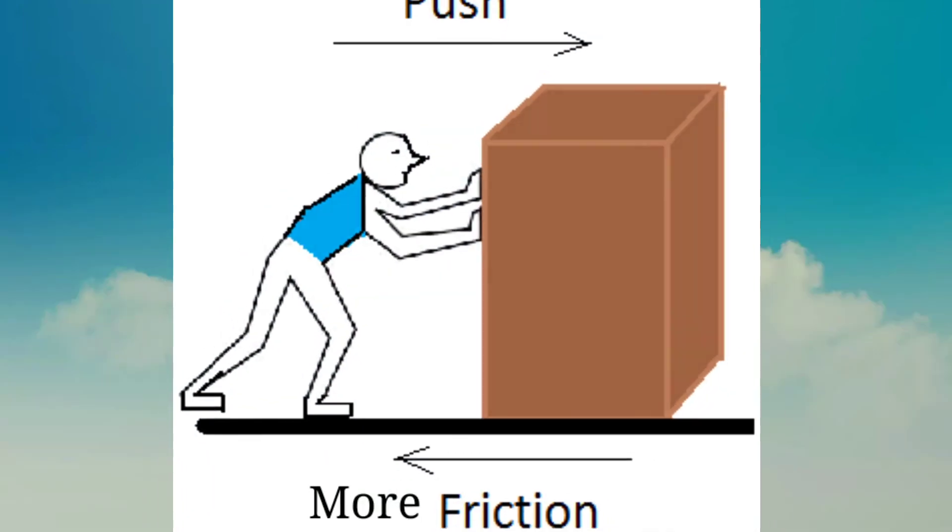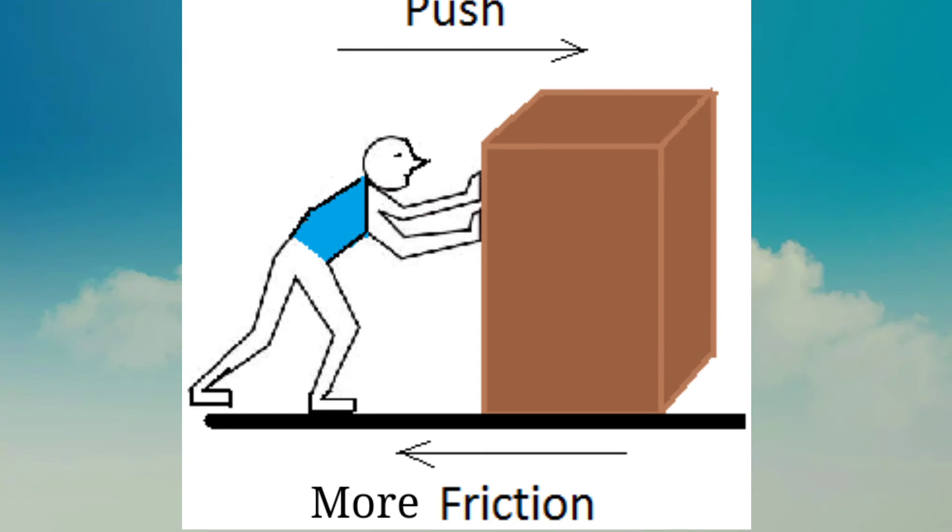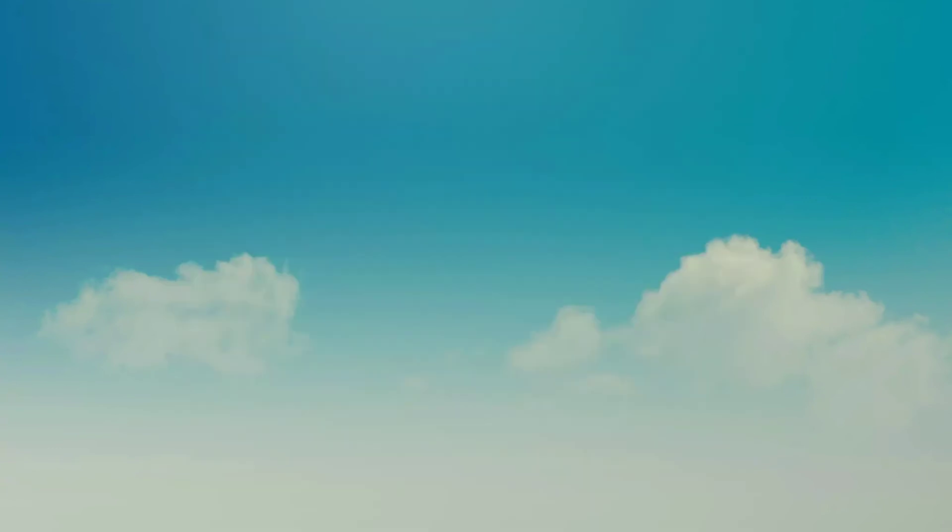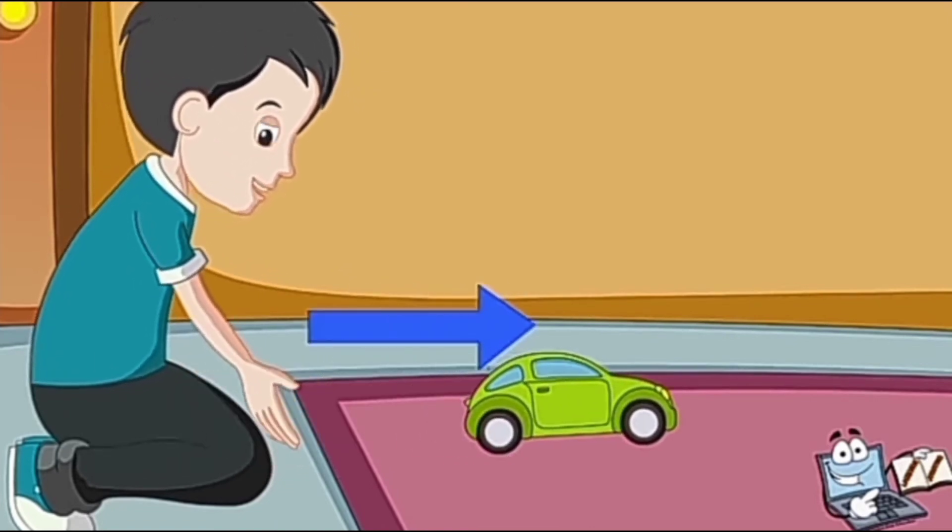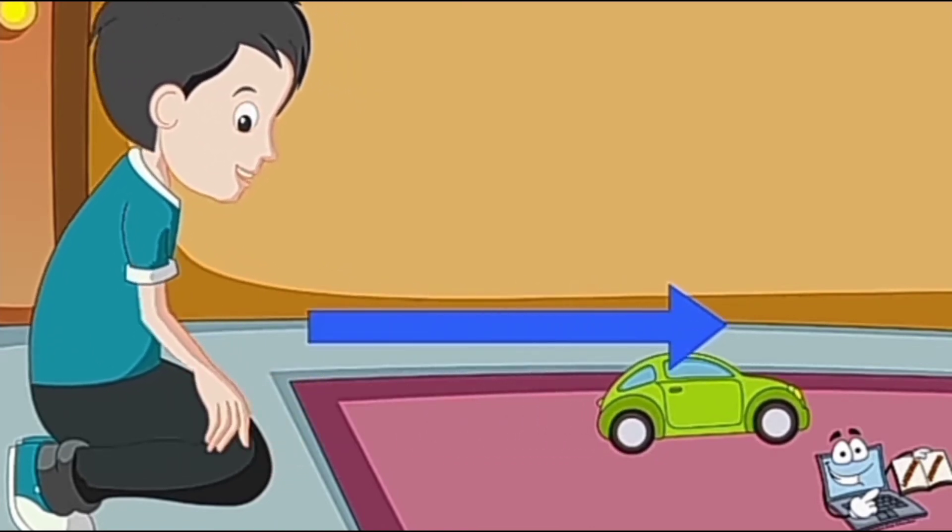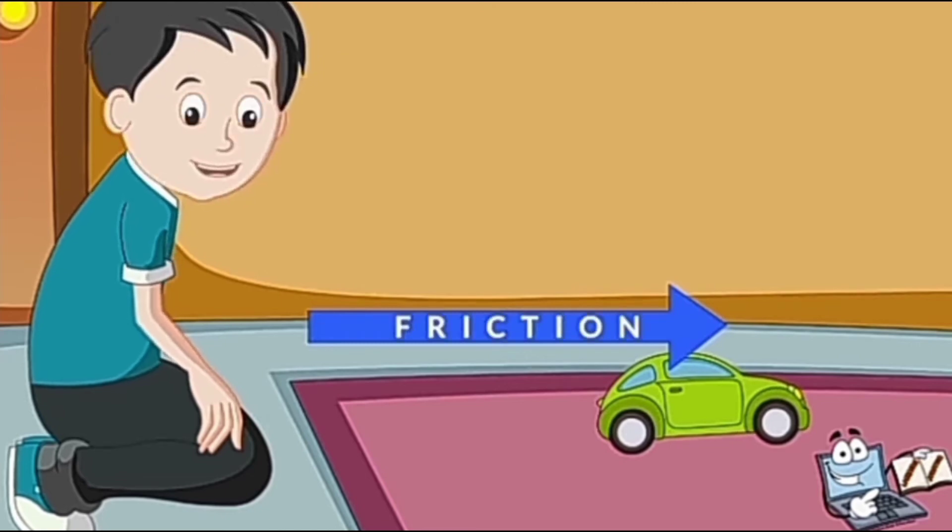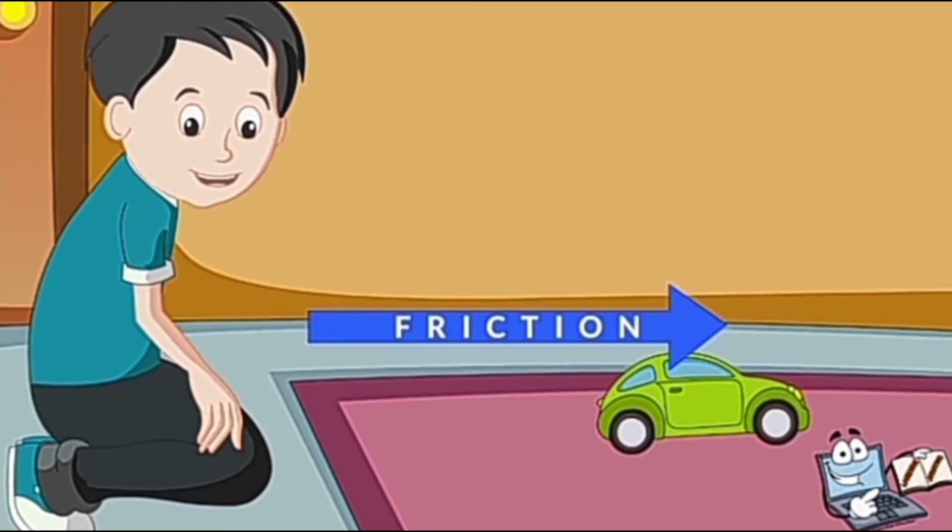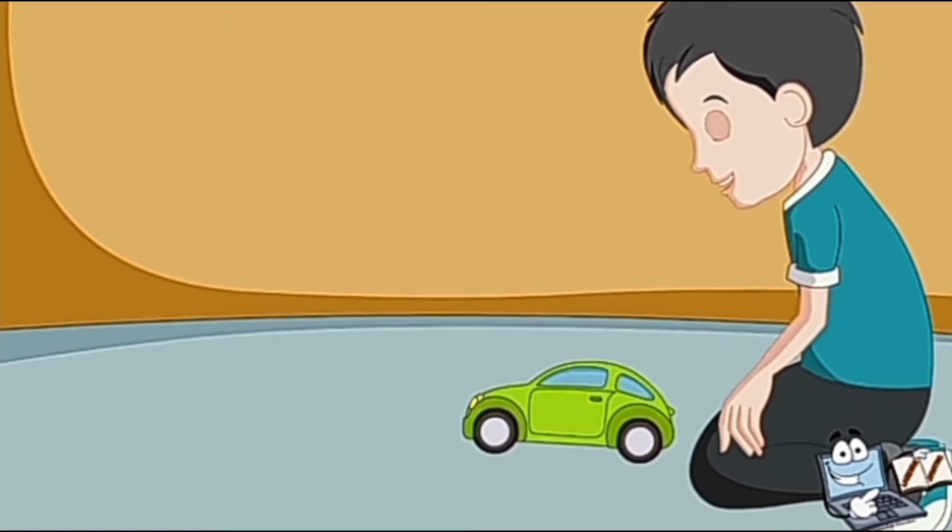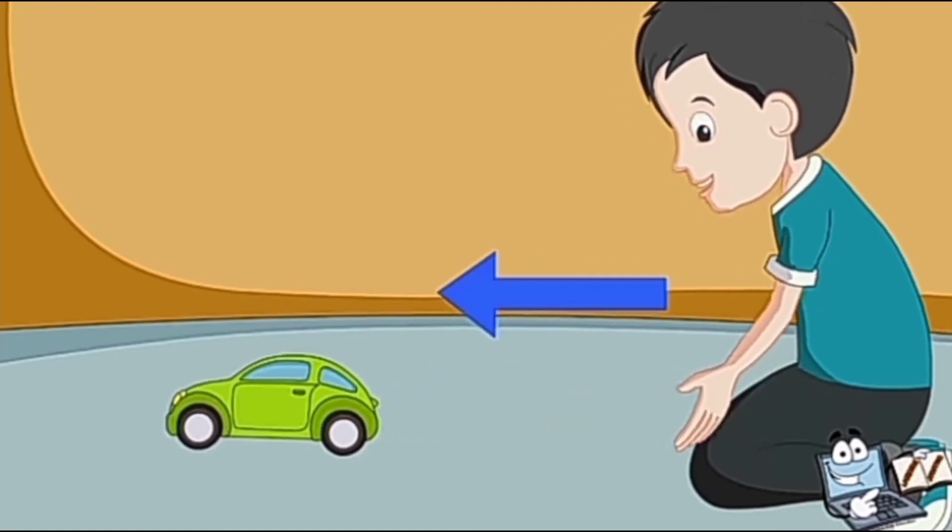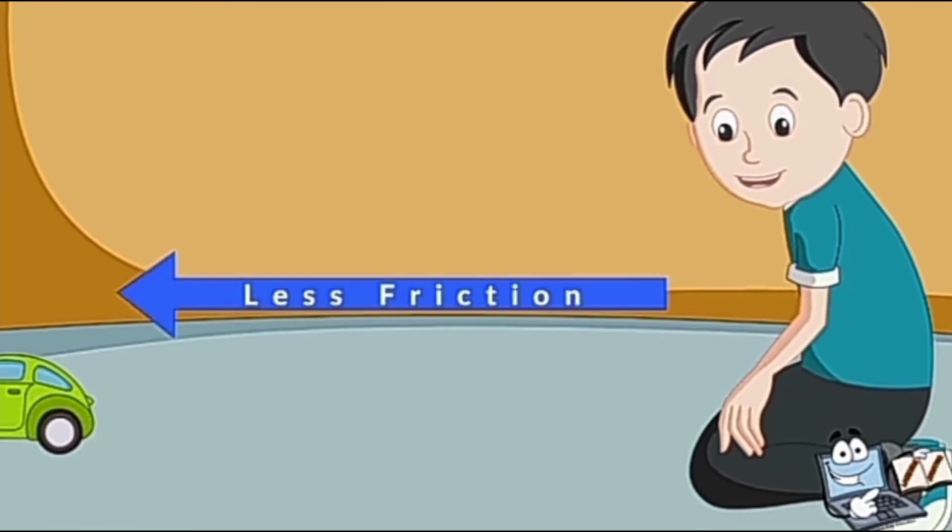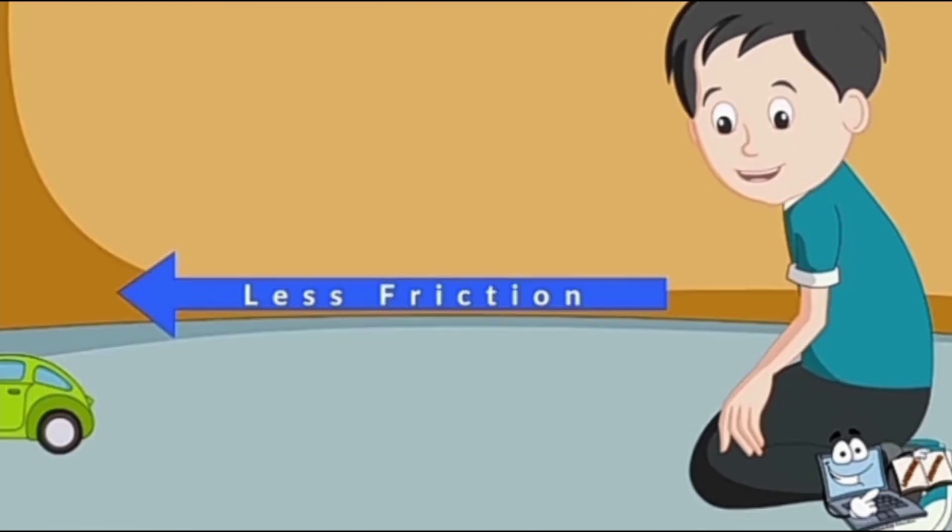However, if there is too much friction, nothing will move. When you push your toy on a carpet, it slows down or stops after some time. Now, push the toy on a smooth floor. Does it go further? Yes, because the force of friction is less on the smooth floor.